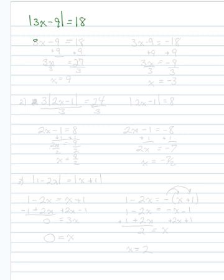the absolute value says that 3x minus 9 could be equal to 18, or 3x minus 9 could be equal to negative 18. And we'll just solve each of these equations now independently.